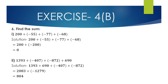Now we'll solve Question 6. Find the sum: 200 + (−55) + (−77) + (−68). Here, 200 is a positive integer and the other three are negative integers. We first add the negative integers: (−55) + (−77) + (−68). Since all are negative, we place a negative sign before the sum: −55 − 77 − 68 = −200.